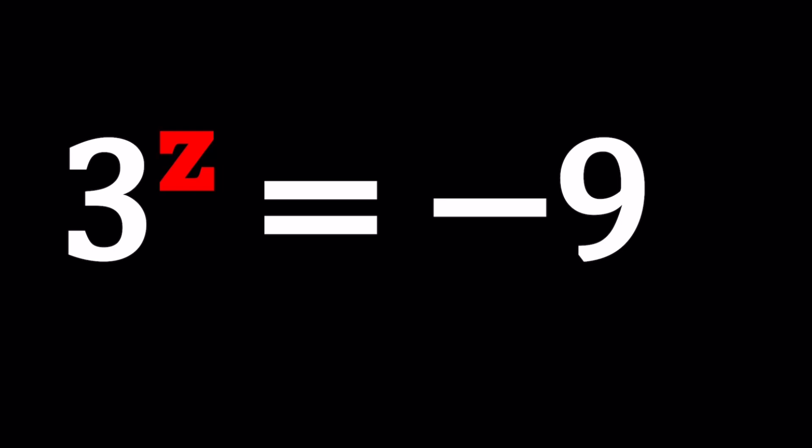So now I want you to consider the complexification of the number 3 and negative 9. How do we complexify these numbers? I'm going to write the 3 using E as a base. We can do this using the well-known identity E to the power ln(x) equals x. So 3 can be written as E to the power ln(3), because E to the x and ln(x) are inverse functions — they undo each other.